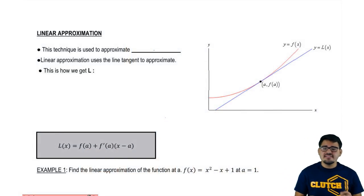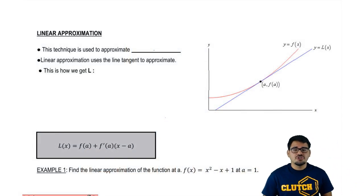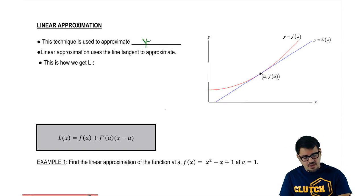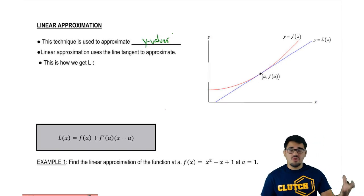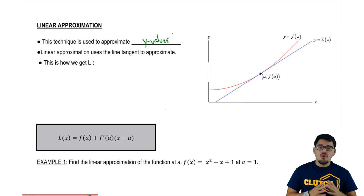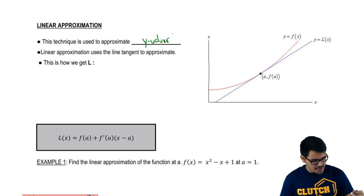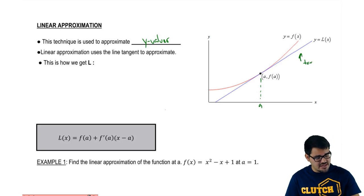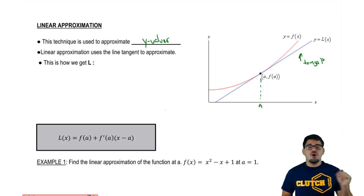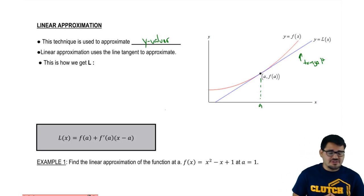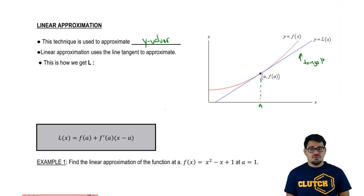Linear approximation is used to approximate y values. So for example, we have this red function f of x, and we want to approximate certain values on that function. We're going to be using a tangent line — we're going to pick a point a and use this blue tangent line to approximate values on our red function. But how do we do it? We need an equation to use linear approximation or linearization.